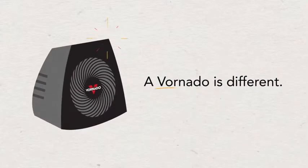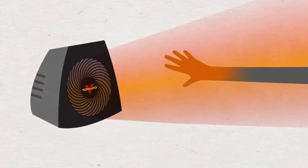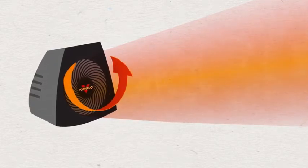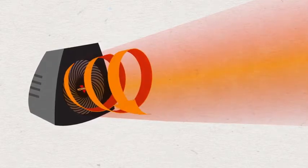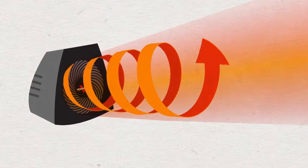A Vornado is different. Unlike average heaters, a Vornado uses powerful air circulation to push out heat. The air flows fast, warm, and gentle in a twisting spiral pattern called vortex action.